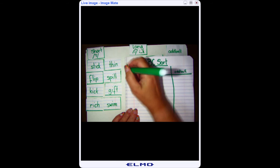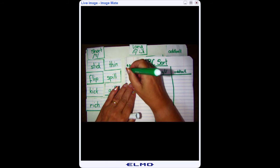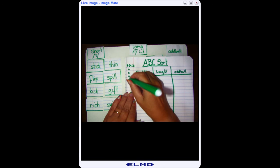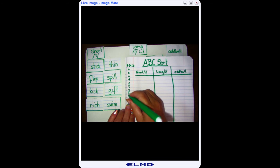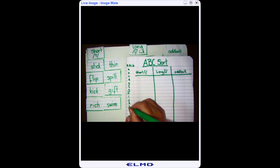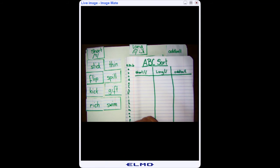And anytime I do an ABC sort, I always put my ABCs down. So I'm going to write down A, B, C, D, E, F, G, H, I, J, K, L, M, N, O, P, Q, R, S, T, U, V, W, X, Y, and Z.